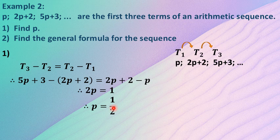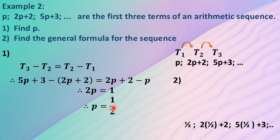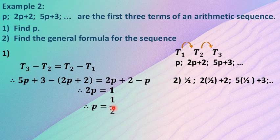Number 2 is asking us to find the general formula for the sequence. So, remember your general formula is Tn equals a plus (n minus 1)d. We need to find the a and d values, but we first need to generate the actual sequence. So, we can't work with p anymore. Let's replace p with what it's equal to. So, p is equal to a half. 2p plus 2 is actually going to be 2 times a half plus 2. And 5p plus 3 is actually going to be 5 times a half plus 3.